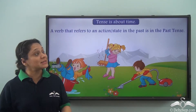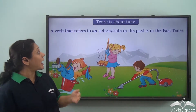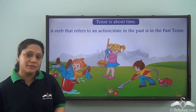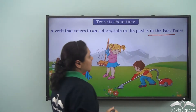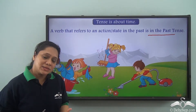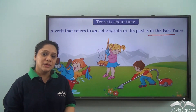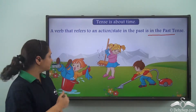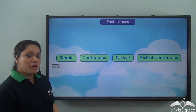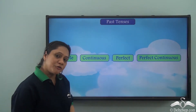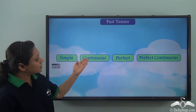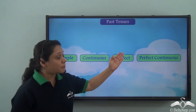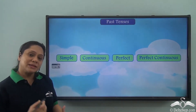We know by now that tense is about time, and a verb that refers to an action or state in the past is in the past tense. You have learned in great detail about the different types of past tenses. Let us quickly revise these tenses and do some exercises. You have learned that past tenses are of four kinds: the simple past tense, the past continuous tense, the past perfect tense, and the past perfect continuous tense.